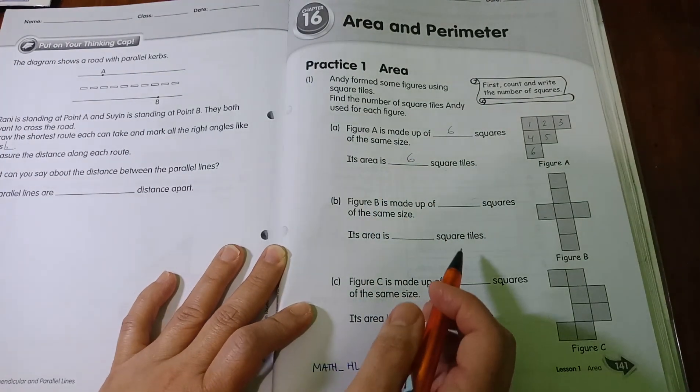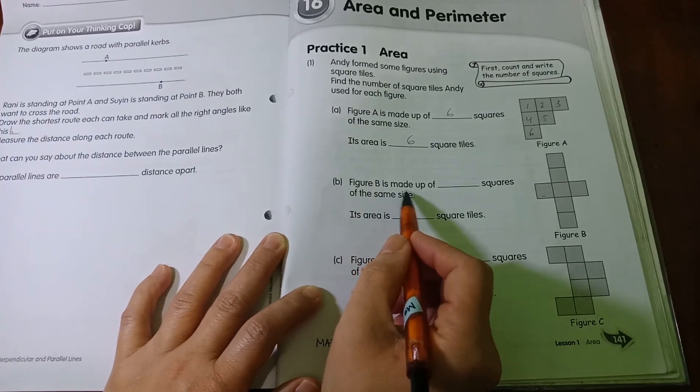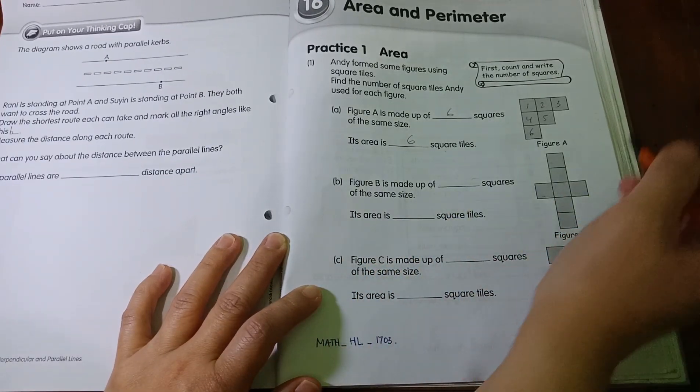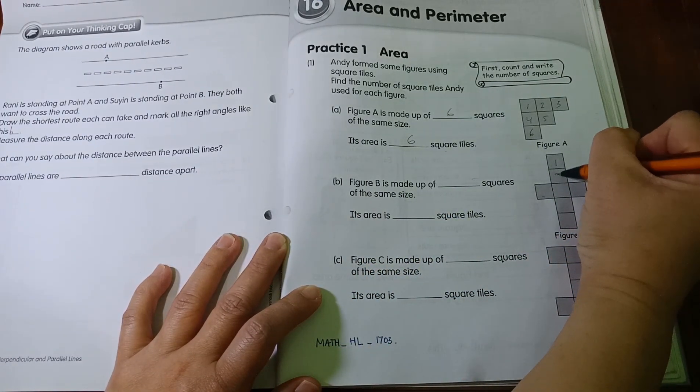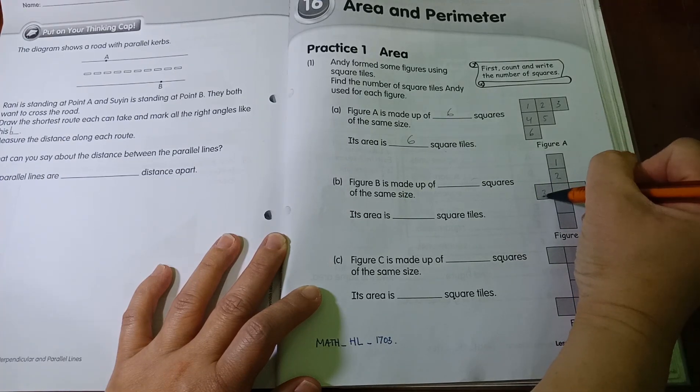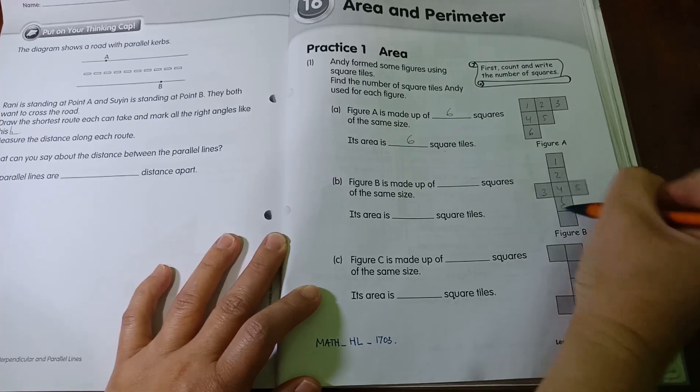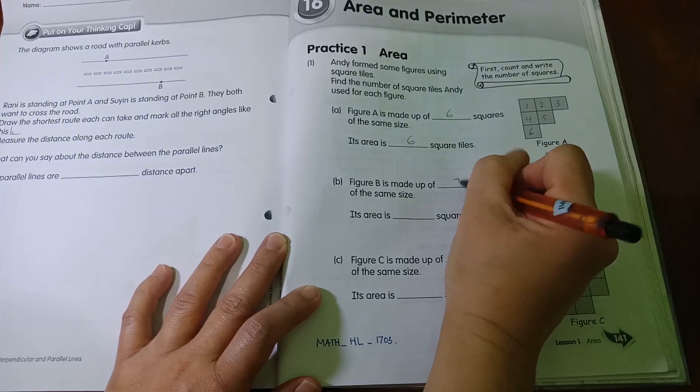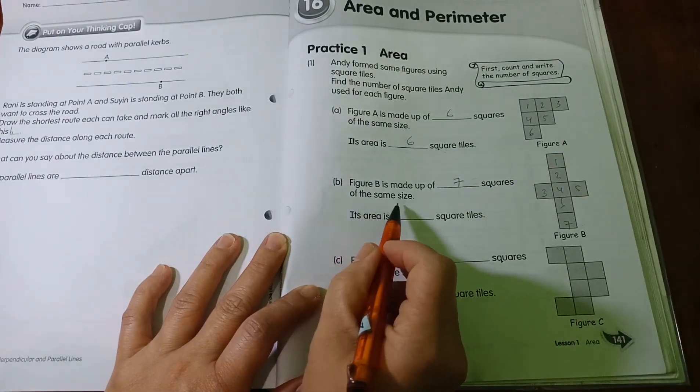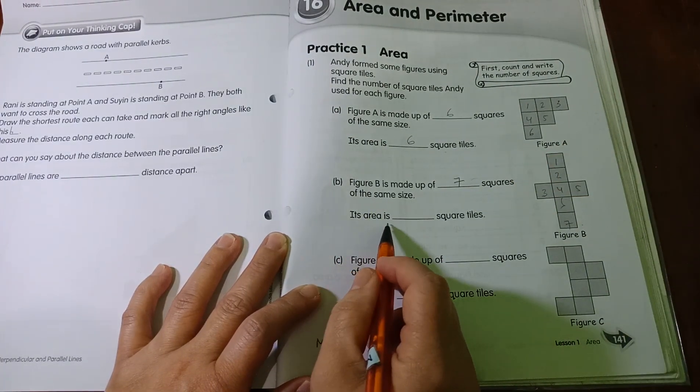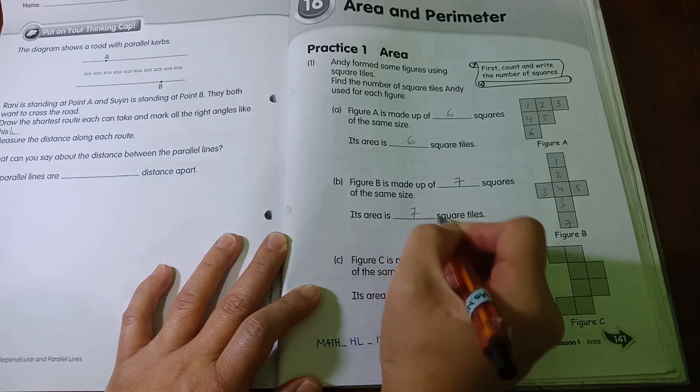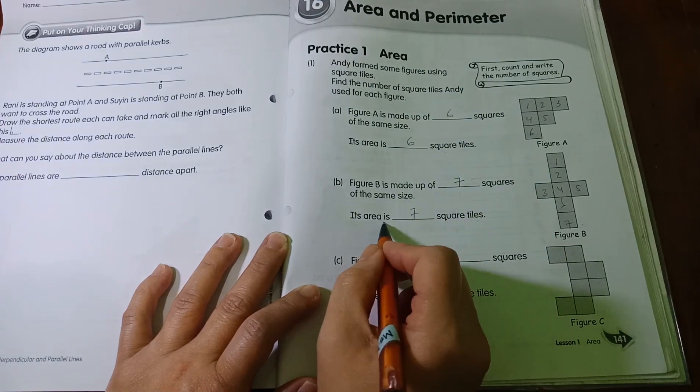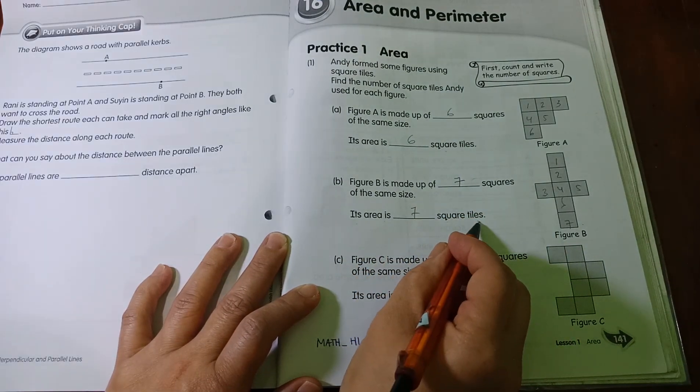Okay, now we're going to move to number B. Figure B is made up of, how many squares are there? Let's count it. 1, 2, 3, 4, 5, 6, 7, so there are 7 squares of the same size. Its area is 7 square tiles.